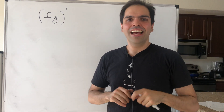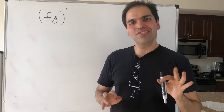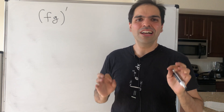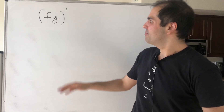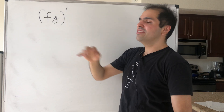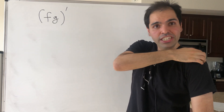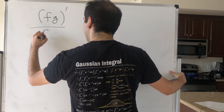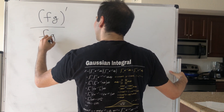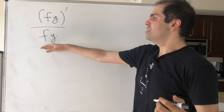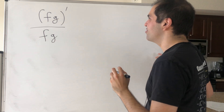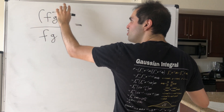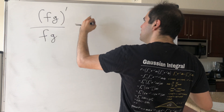All right, thanks for watching. Today I would like to give you a very slick proof of the product rule using only the chain rule. More precisely, consider fg prime, and let's divide this by fg. The only caveat is you have to assume f and g are positive for this proof, because notice fg prime over fg...